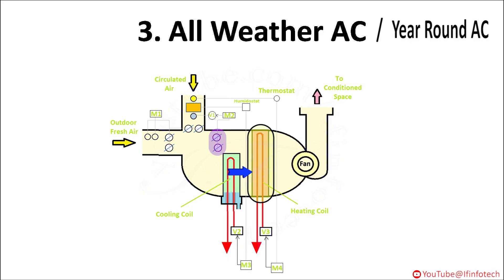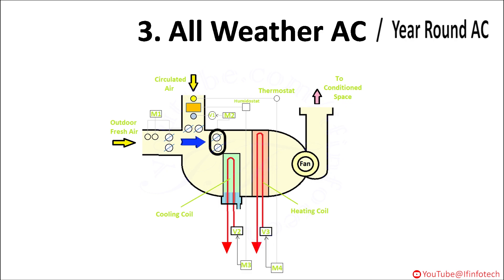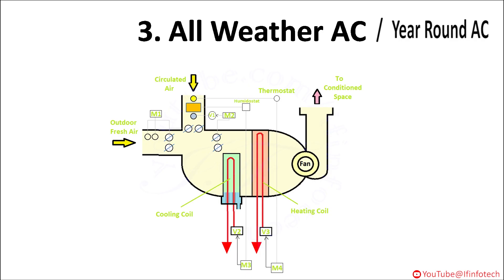All air is then passed through the heating coil. The heating coil may be electrical resistance type or a coil through which steam passes. It is provided with valve V2 which can be controlled by motor M4. In winter season, the bypass damper is almost open and most of the air is directly passed through the heating coil. This year-round AC provides comfort conditions throughout the year with respect to outdoor conditions.